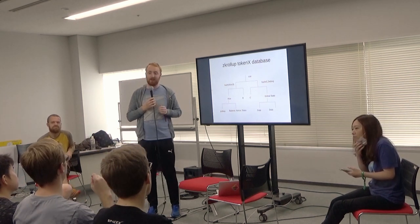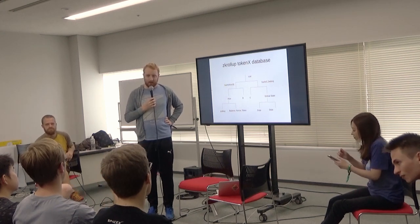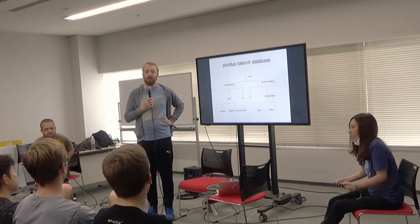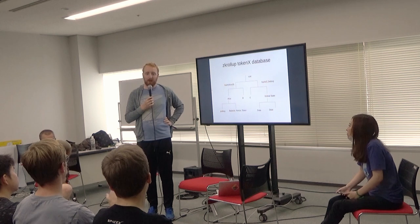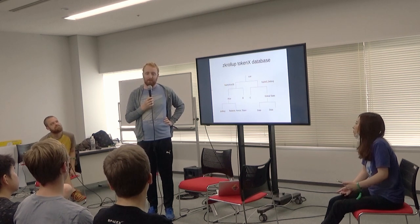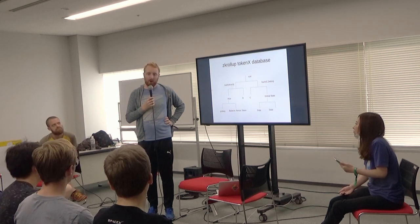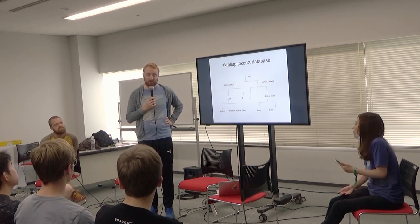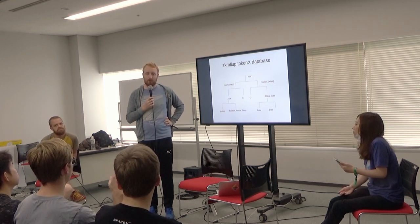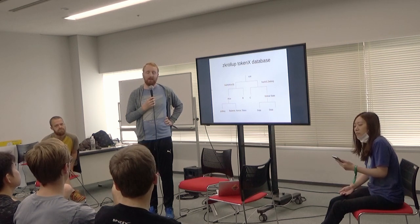Question: What data are you putting on chain to achieve data availability? Answer: It's the minimal data you need to reconstruct the state. For the token transfer example, that minimal data is the to address, from address, and the amount. So it's only the accounts that were touched in that state transition.